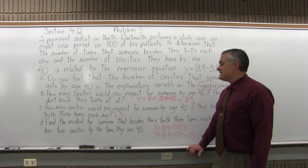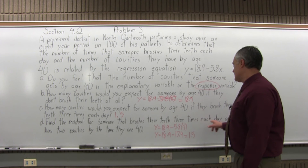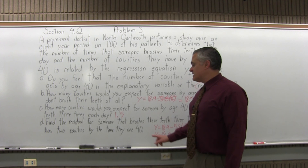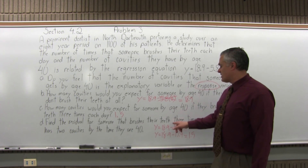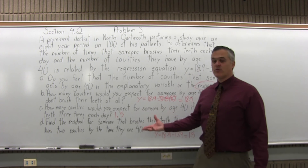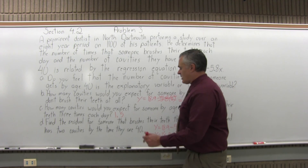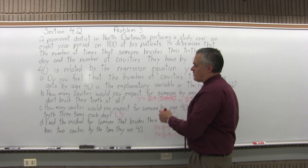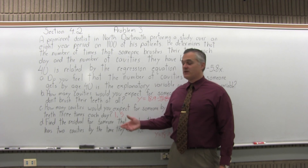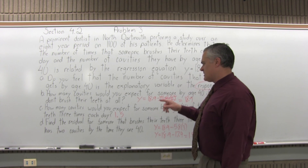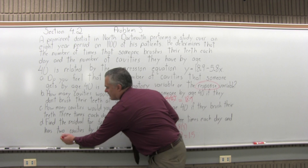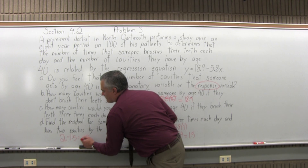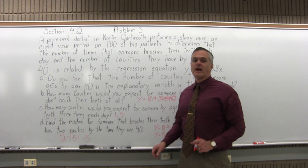Part D: find the residual for someone who brushes their teeth three times each day and has two cavities by the time they're 40. The residual is the difference between the predicted value from the linear regression equation and the actual value of a real data point. We put in three and got a predicted value of 1.5. So the real value of two minus the predicted value of 1.5 gives a residual of 0.5.